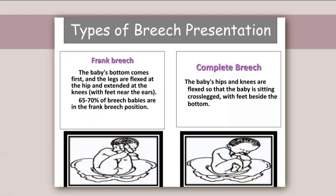In frank breech, the baby's bottom comes first and the legs are flexed at the hip and extended at the knees. 65 to 70% of breech babies are in the frank breech position. In complete breech, the baby's hips and knees are flexed so that the baby is sitting cross-legged with the feet beside the bottom.